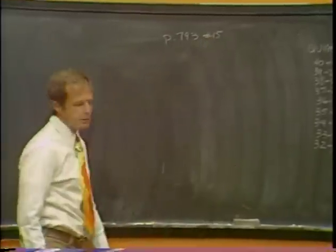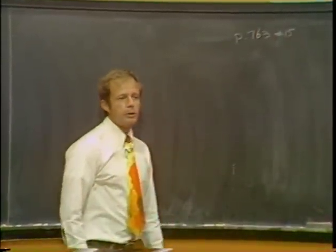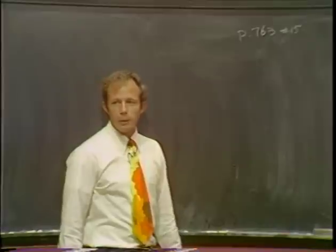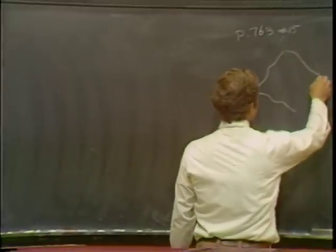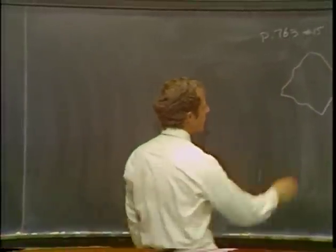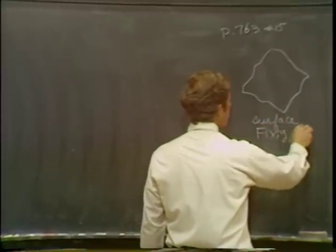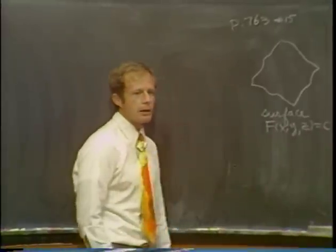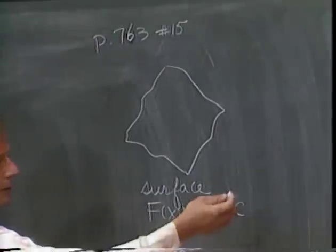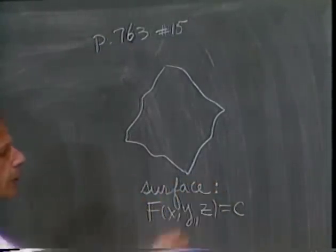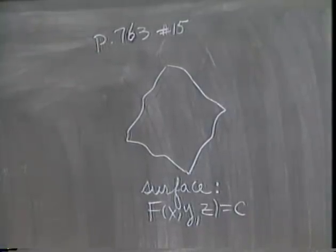It's a homework problem. I'm going to deal with it in more generality, which for some of you means I'm not going to help you at all, but there's a reason for it — just so you don't lose sight of what is supposed to be going on here. Here's a given surface; let's make it a level surface. As soon as I say that, you're supposed to start thinking gradients. The surface given in that problem is really a hyperboloid of two sheets.